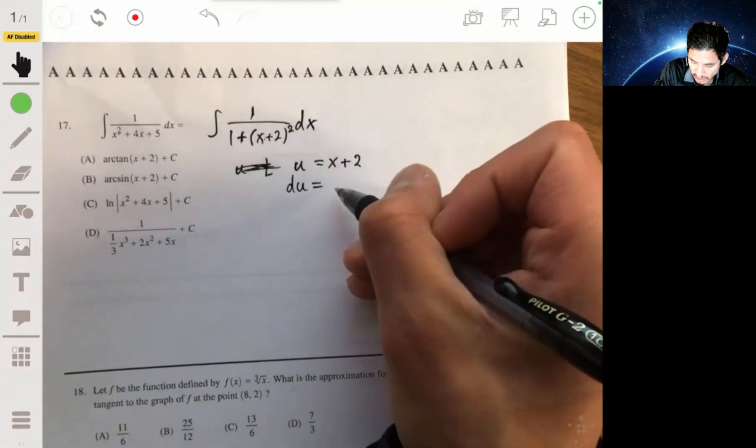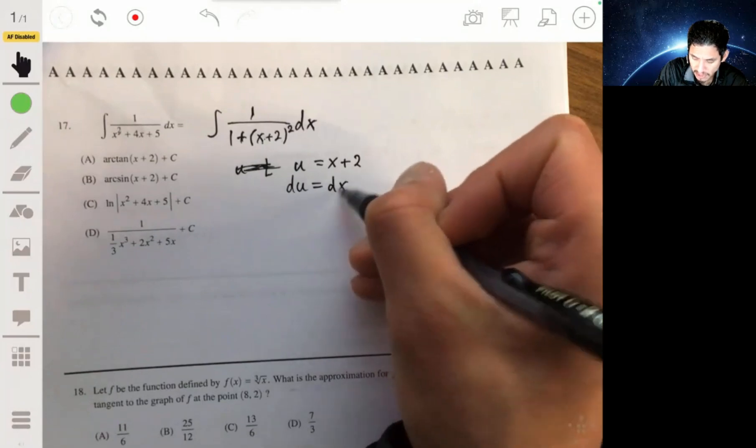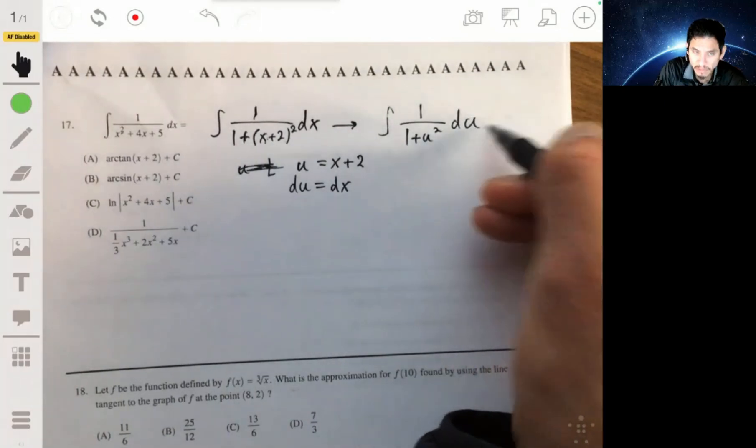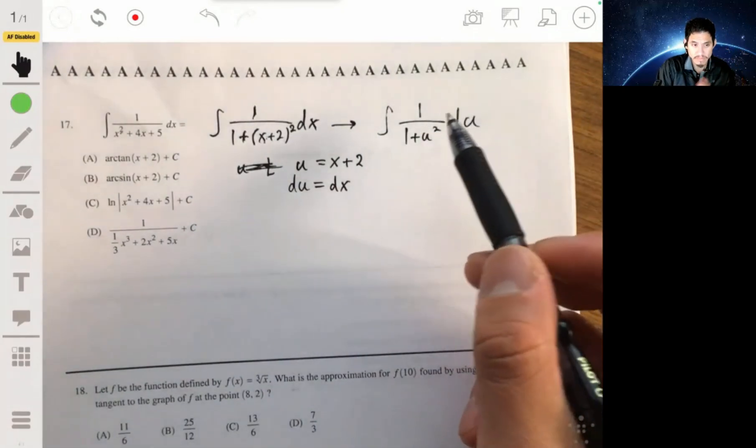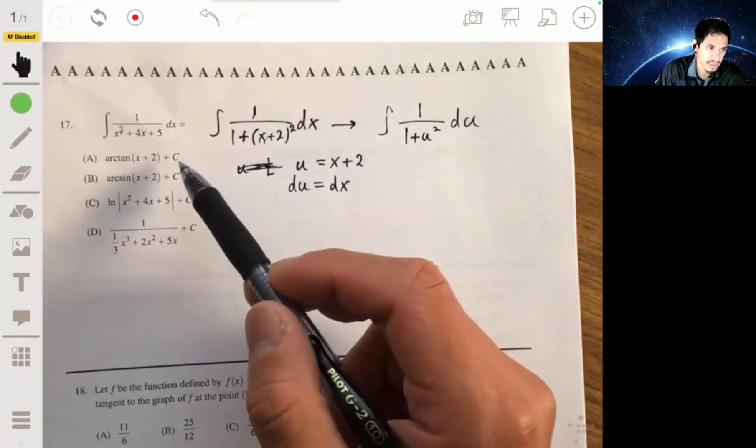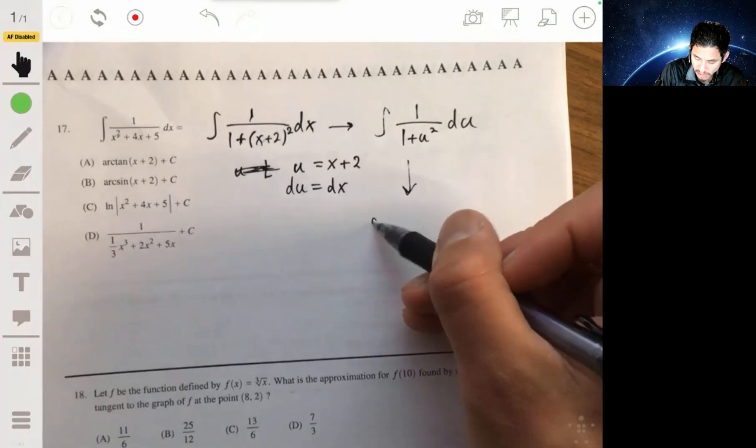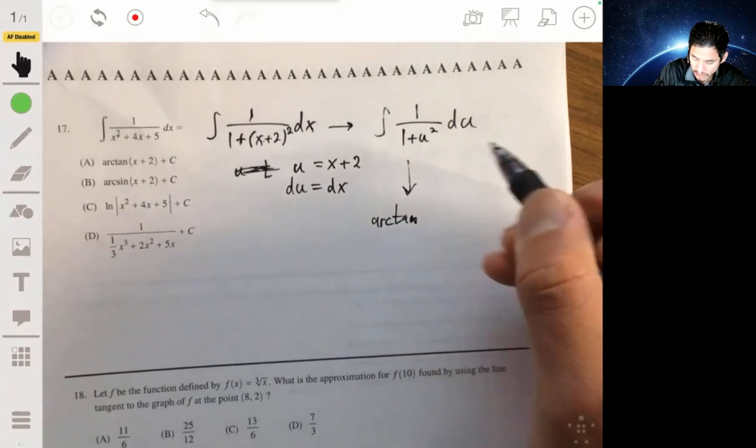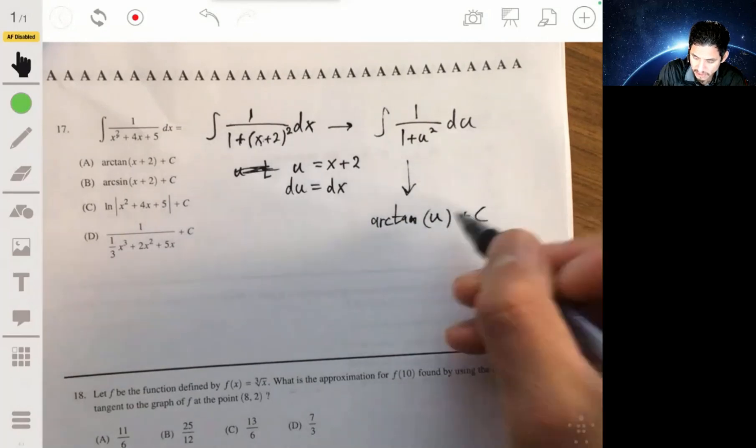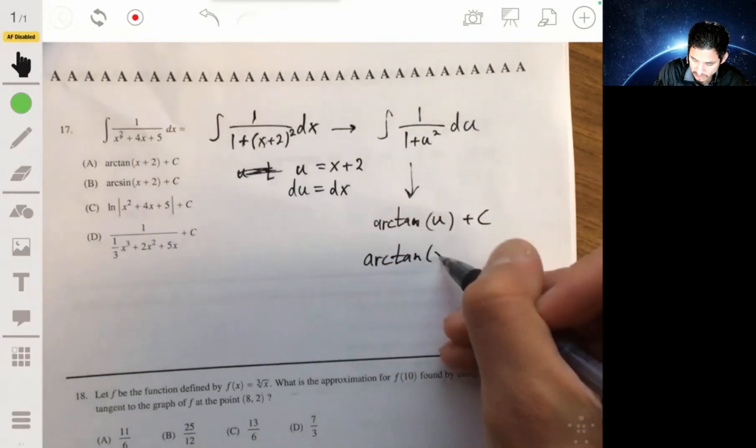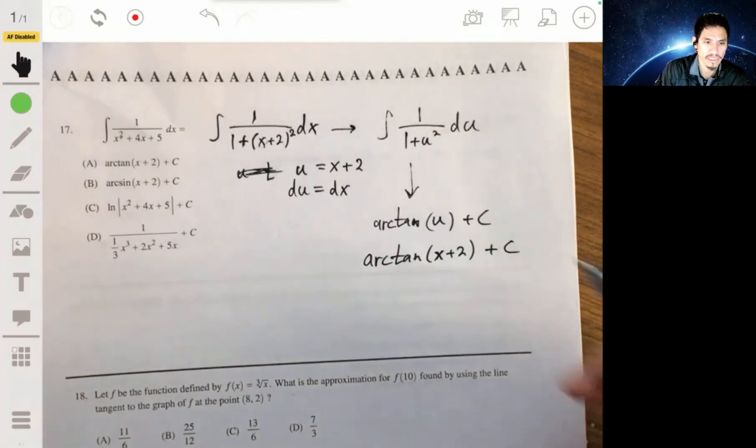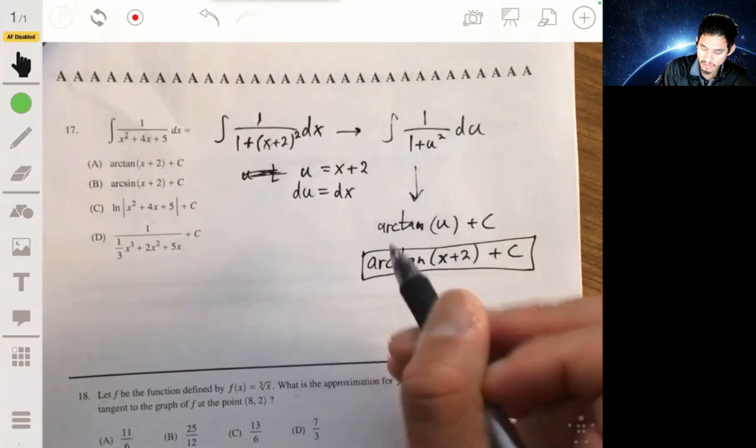Then du would be simply dx. And then what you would have here is 1 over 1 plus u squared du. And then from here, it's a little more clear to see that this is the derivative of the inverse tangent function or the arctangent. So then this would just be the arctangent of u plus c, or you can say the arctangent of x plus 2, plus your constant c. So your answer will be A.